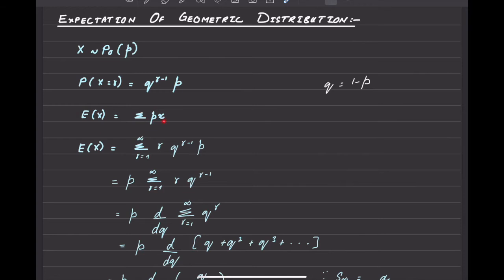We also must know that the expectation is the summation of probability times the random variable. So if r is the random variable, the expectation must be the summation from r equals 1 to infinity of r times q to the power r minus 1 times p.